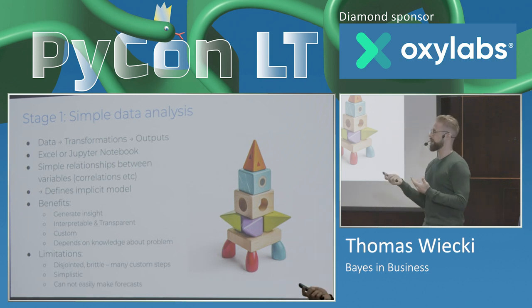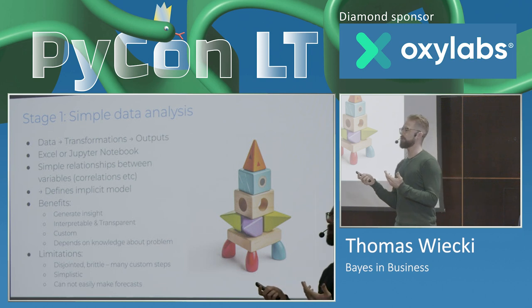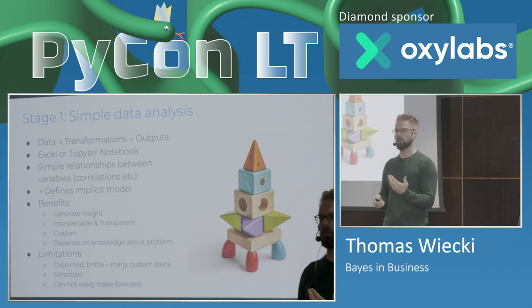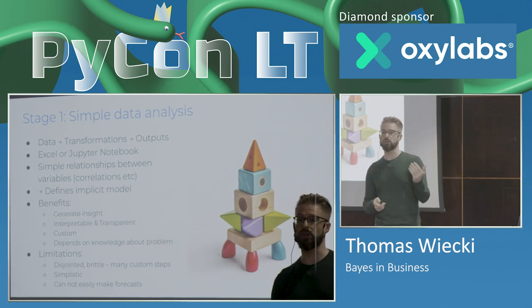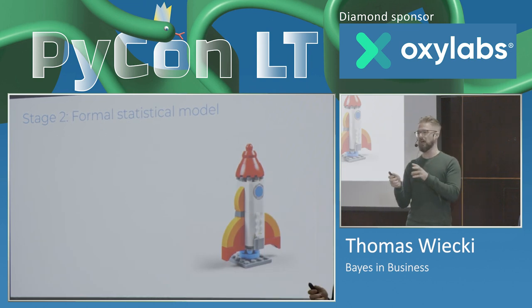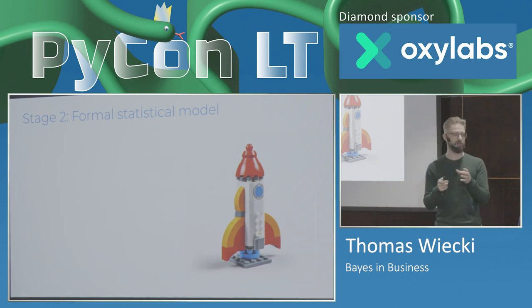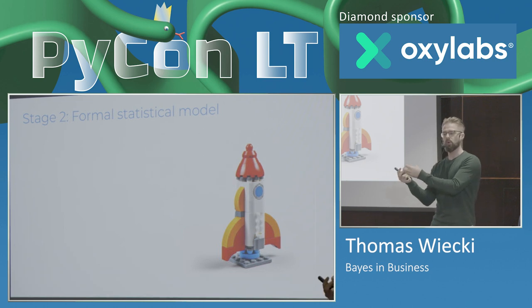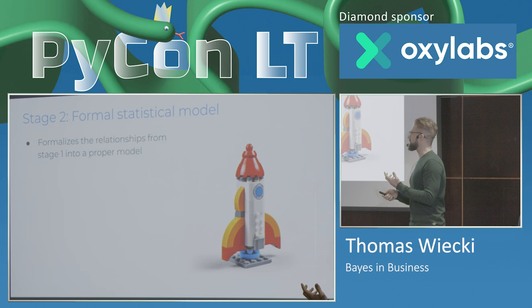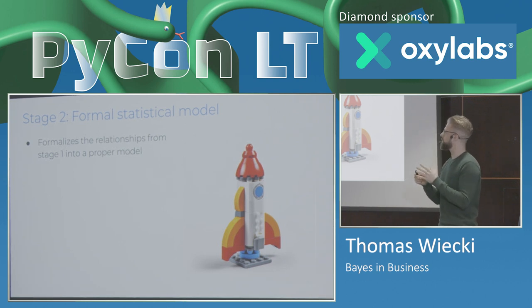One technical limitation is we can't really use the implicit model we have to make predictions. That's what brings us to stage two, which I like to call the Lego stage, because now we have a more formal statistical model. Here we have these building blocks, which are going to be probability distributions that we stack together to build more complex things like a rocket ship. This now formalizes the relationship from our first stage model.